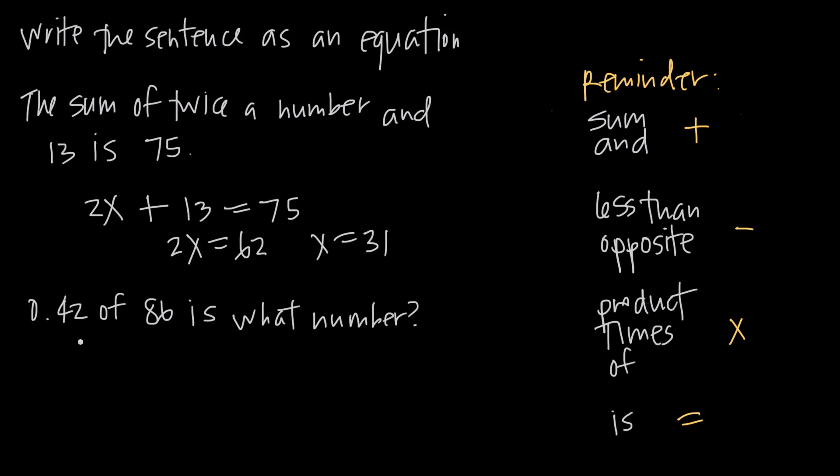What about this one? 0.42 of 86 is what number? Well, remember that of means times or multiplication. So we have 0.42 of 86 is what number? Well, what number? We don't know what that is yet, so we'll go ahead and use x.